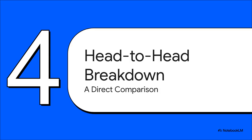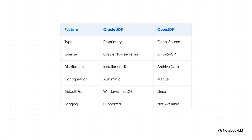Now let's put them side by side and really see how those differences stack up. The pattern is crystal clear — it's like a domino effect. It all starts at the top with proprietary versus open source. That one choice dictates the license. The license then dictates the distribution method: a simple installer versus a manual archive. And that in turn leads to the core setup difference — automatic versus manual — which explains everything about why each one is the default on different operating systems.